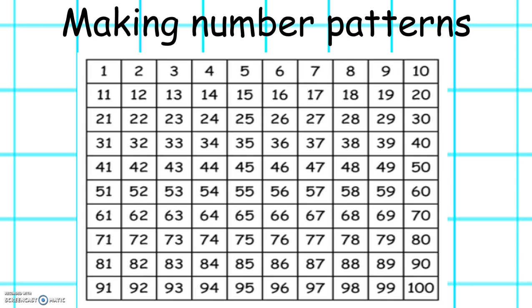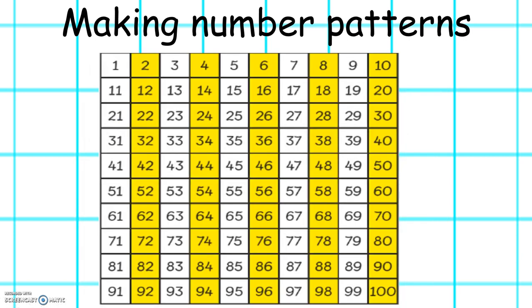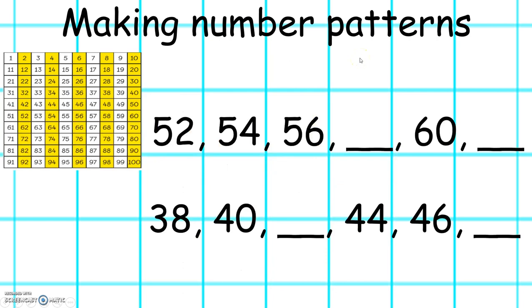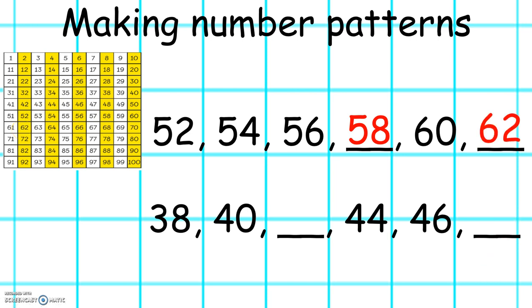This week we will also be learning how to make number patterns. This is called a hundred square. On our number square we can see that if we count in twos, the numbers in twos are yellow. Let's use our number square to complete this number pattern: 52, 54, 56, 58, 60, 62. Let's try to complete this number pattern: 38, 40, 42, 44, 46, 48.